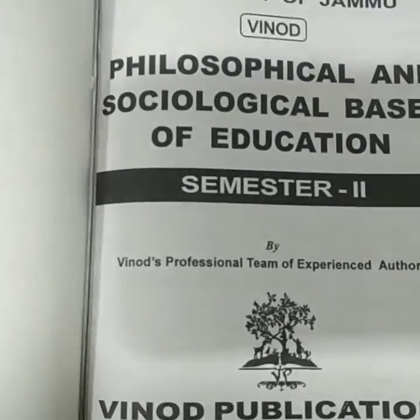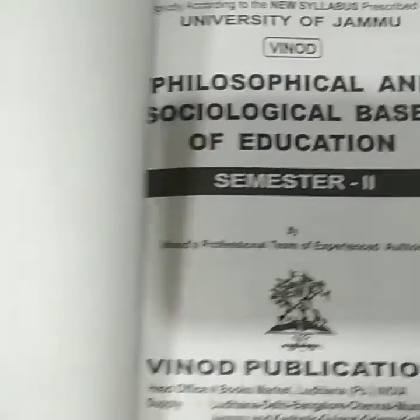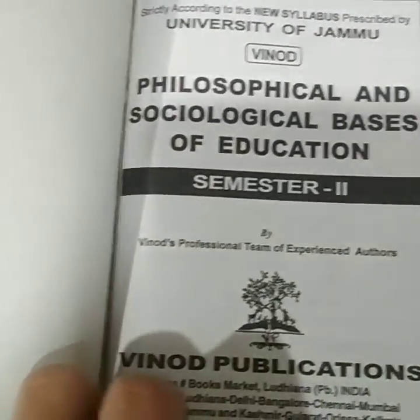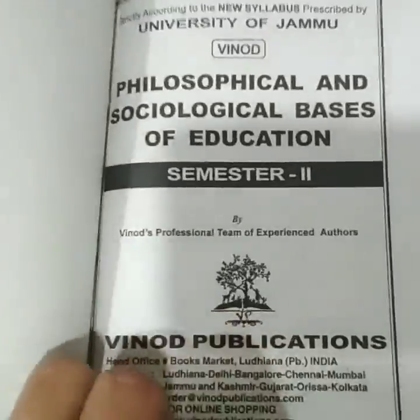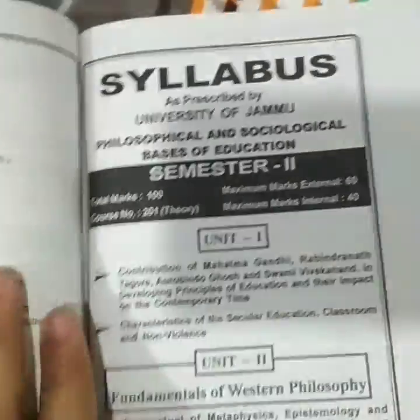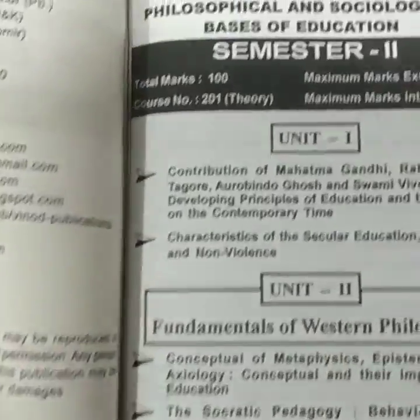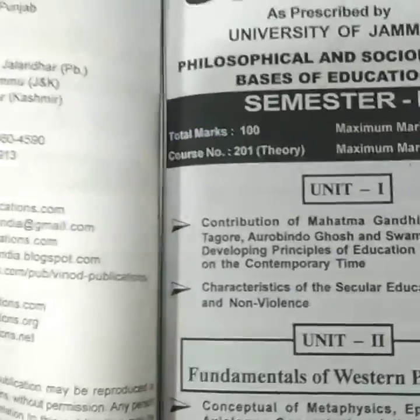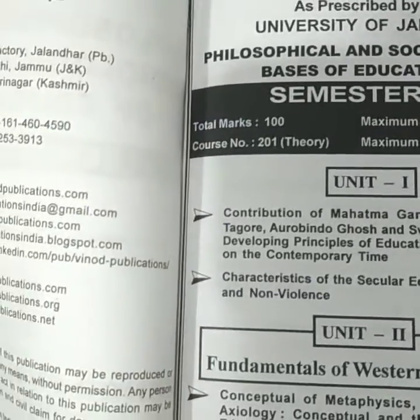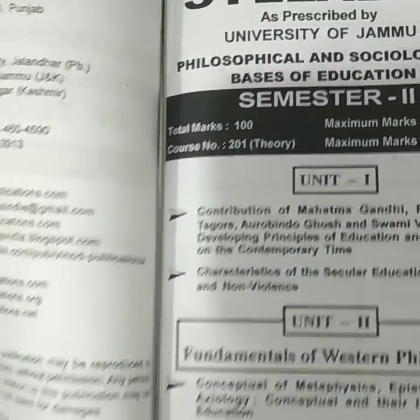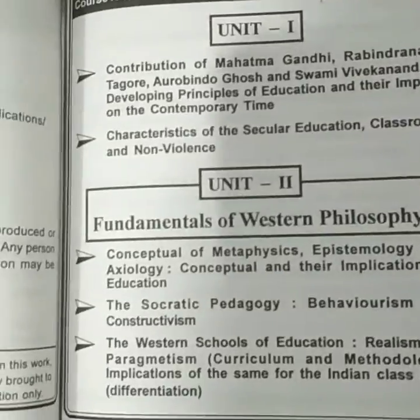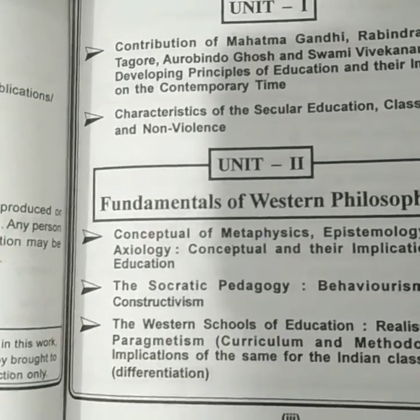As you can see, it's written by the professional team of experienced authors of Vinod Publications. Now let's check this book. First of all, the syllabus is mentioned here unit-wise: Unit 1 covers the contribution of Mahatma Gandhi and Rabindranath Tagore, Unit 2 covers conceptual metaphysics and Western schools of education, and then Unit 3 and Unit 4 are also there.